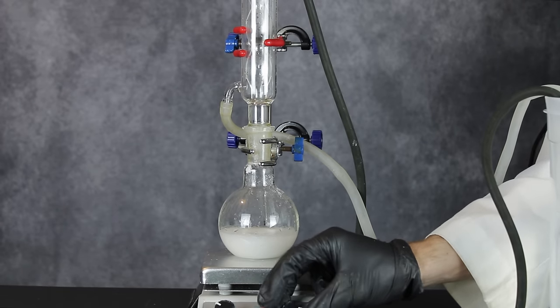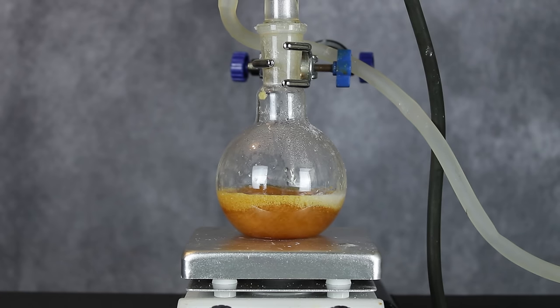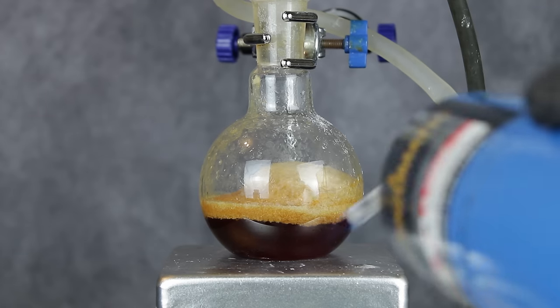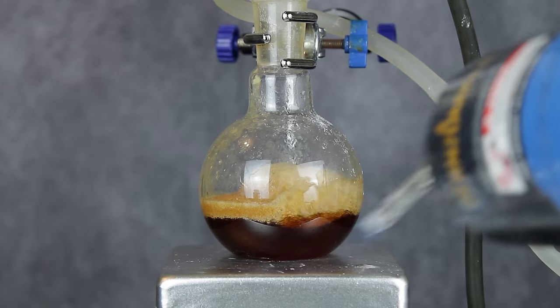With everything added, a reflux condenser was connected to the top of the flask, and the hot plate was turned on. The paper I was following said to maintain a gentle reflux for about four hours. So I pulled out my blowtorch because I have the patience of a hyperactive child and did my best to avoid boiling over my flask contents.